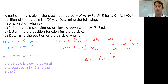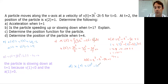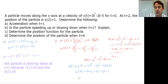Part (d): find the position when t = 4. Plug into x(t) = t³ − t² − 5t + 7: x(4) = 64 − 16 − 20 + 7 = 35. So when time is 4, the position of the particle is 35.